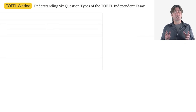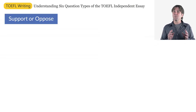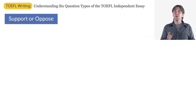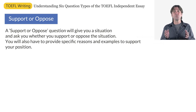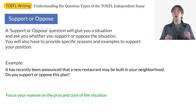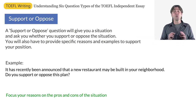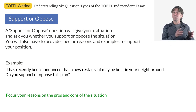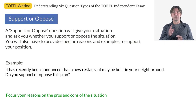Now let's look at the second essay question type: support or oppose. This type of question is very similar to the agree or disagree question. However, instead of asking you to agree or disagree with a statement, the support or oppose question will ask you to support or oppose a situation. Here's an example: It has recently been announced that a new restaurant may be built in your neighborhood. Do you support or oppose this plan? In this type of essay, be sure to focus your reasons on the pros and cons of the situation. If you decide to support the plan, then your essay will need to focus more on the pros, but don't be afraid to mention a con. For example, you can talk about how building the restaurant in the neighborhood will cost taxpayers money, but it'll be worth the cost because you feel it will benefit the whole community. You will need to give reasons why it will benefit the community.